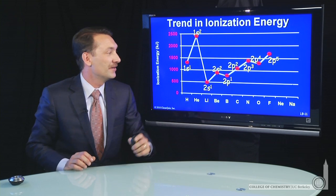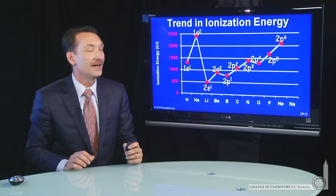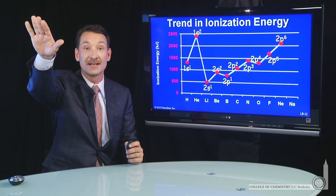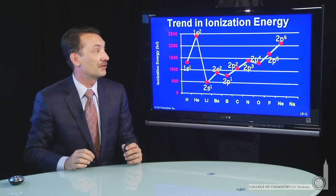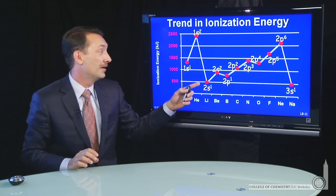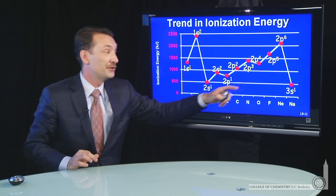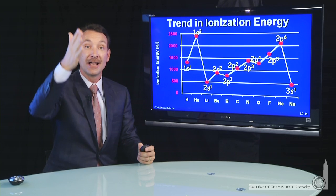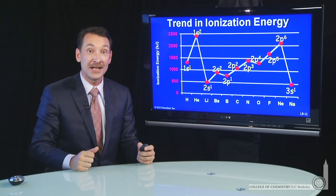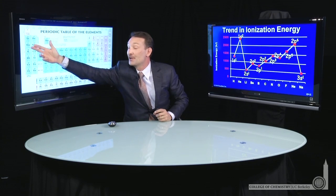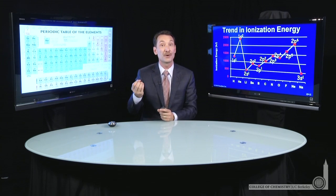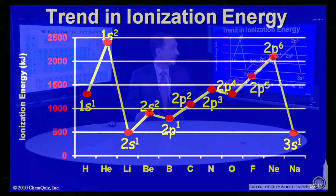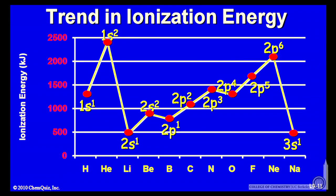As I go to 2p5 and 2p6, I have that same trend of increasing ionization energy because of the increasing charge on the nucleus. And then sodium — look how similar sodium is to lithium. Elements in the same column of the periodic table have similar properties; they're both easy to ionize. Lithium has a 1s2 2s1 configuration, and sodium has a 3s1 configuration.